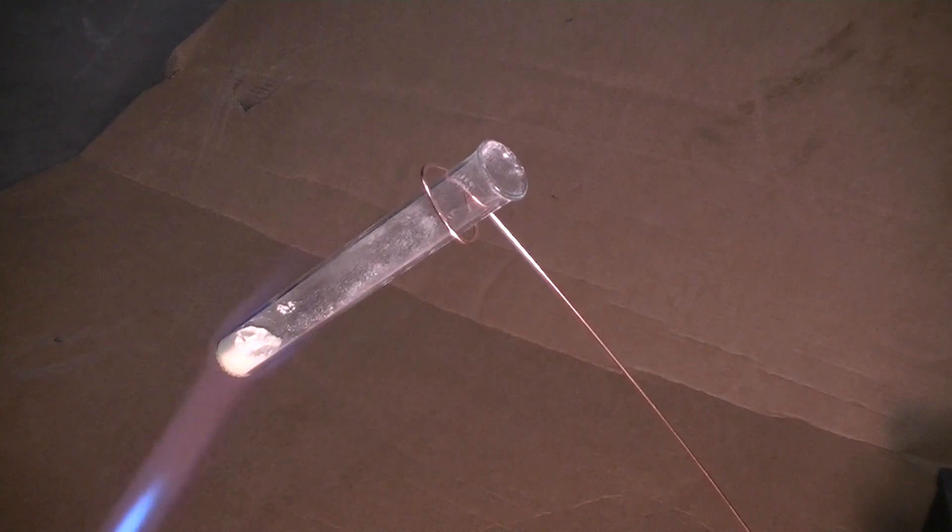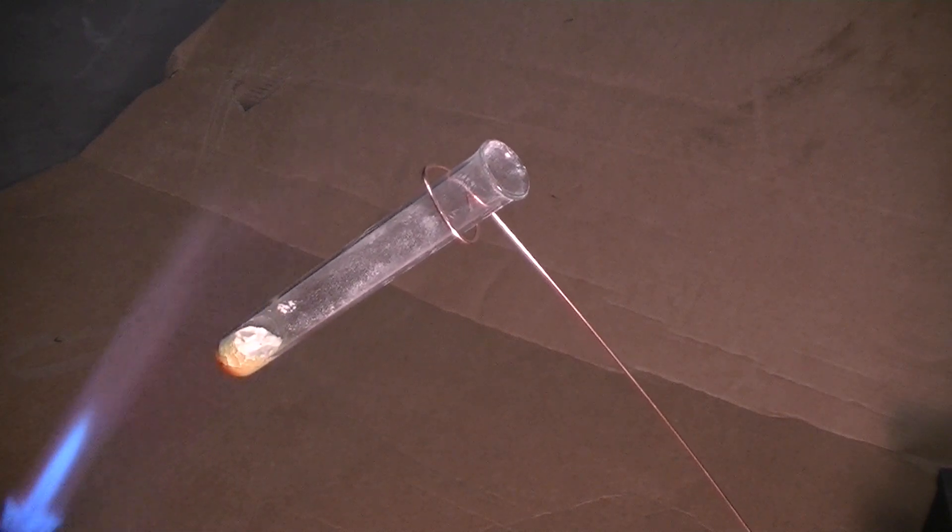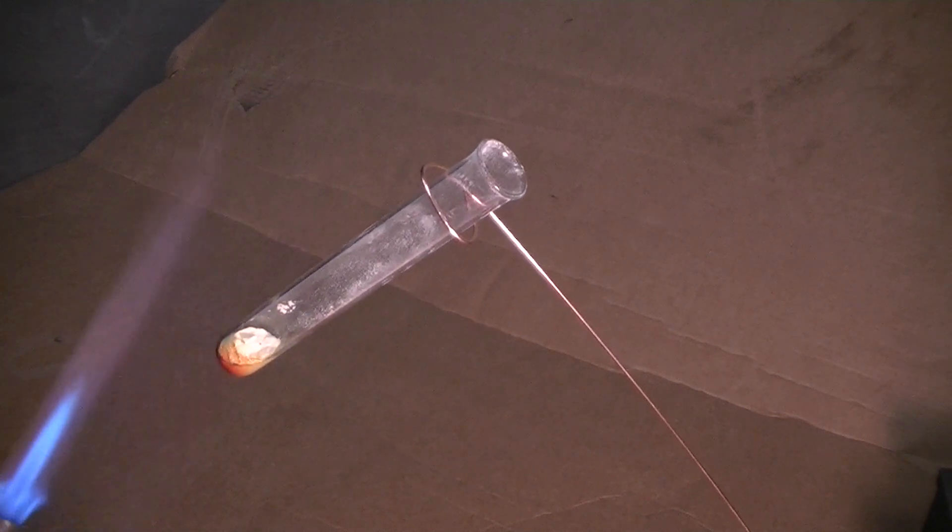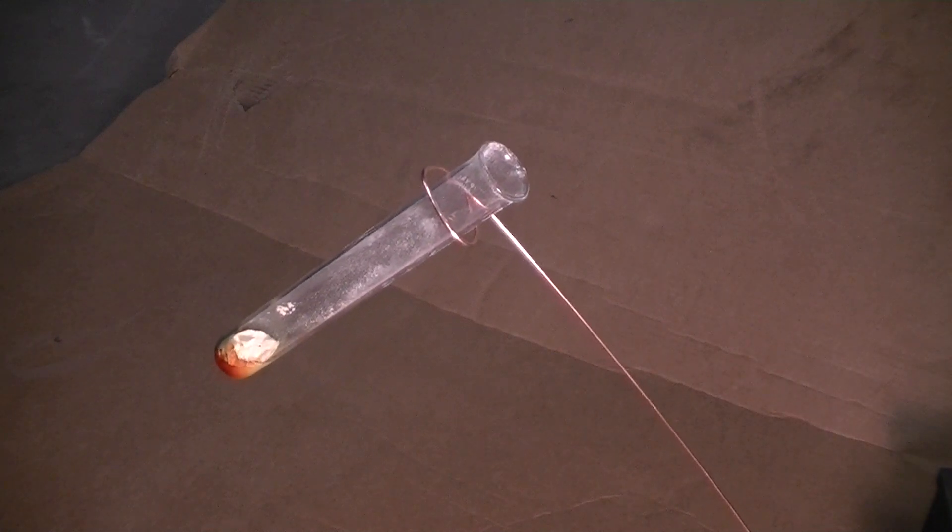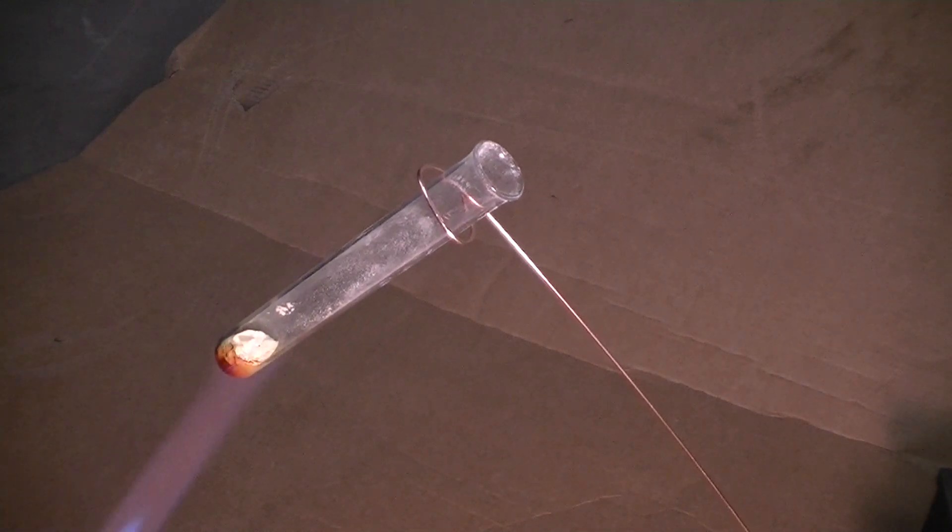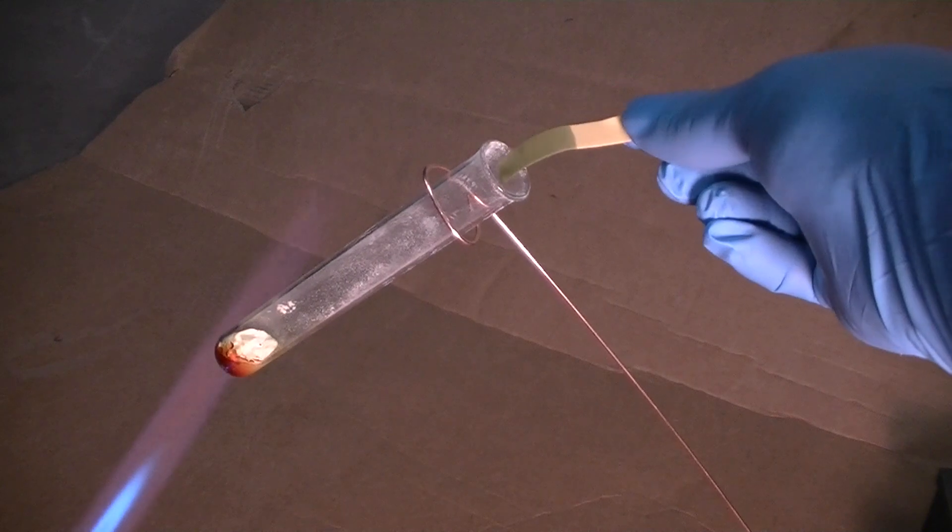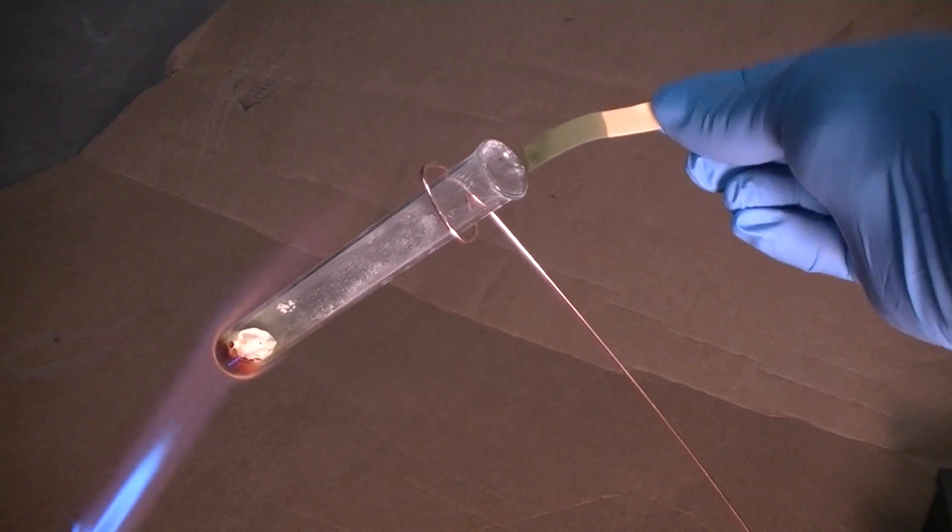In our second demonstration, to show the reactivity of some of that noxious sulfur dioxide and sulfur trioxide gas which is formed when sulfur is burnt in air, we have loaded a test tube with some sulfur powder which we are heating with a blow torch.